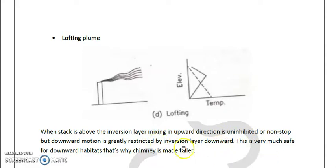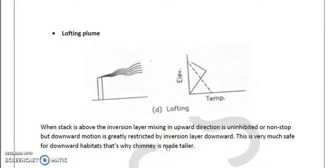So by the inversion layer downwind, this is very much safe for downwind habitat. This lofting plume is a sort of safe condition for the downwind habitat which will not be exposed to more pollution load. That's why chimneys are made taller, so the chimney will always be above the inversion layer.